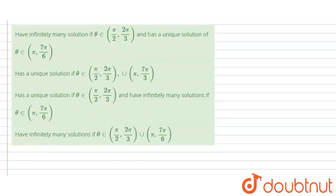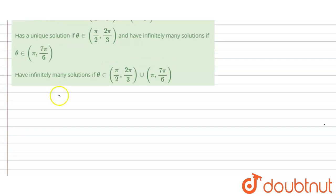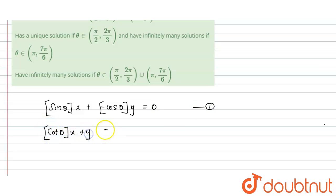We have to determine which condition holds. Let's move to the answer. I'm going to write down the given equations. Equation 1: ⌊sin θ⌋·x + ⌊-cos θ⌋·y = 0. Equation 2: ⌊cot θ⌋·x + y = 0.